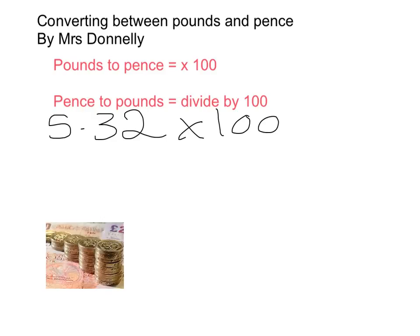So straight away, I know 5 times 100 will be 500, so my answer is going to be 532 pence.